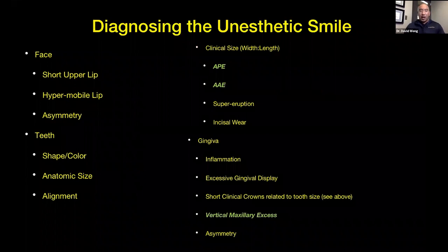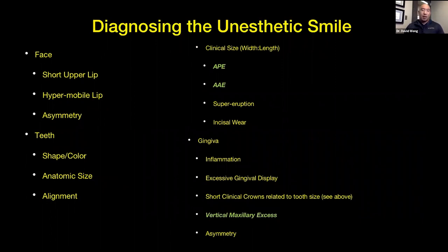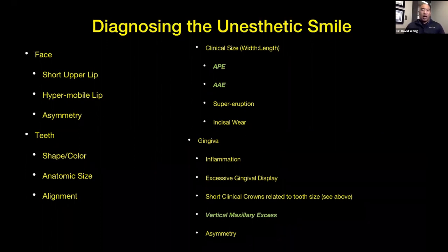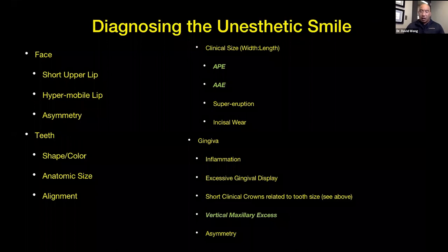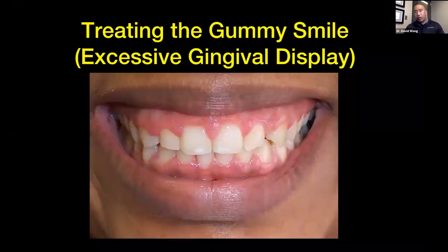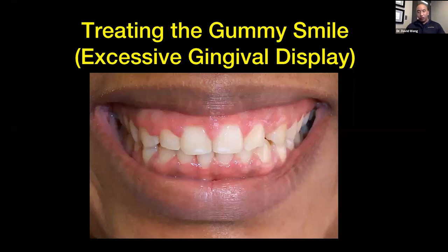When we're talking about smiles, there's a laundry list of different things we look at. What I've highlighted in green is what we're going to talk about today: APE — altered passive eruption; AAE — altered active eruption; and vertical maxillary excess. Those are the three main things, and we're going to talk a little bit about gingival asymmetry in general as well. Next on our agenda is treating the gummy smile or excessive gingival display.